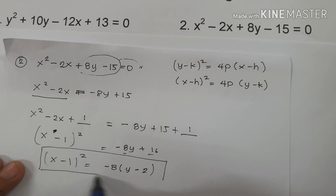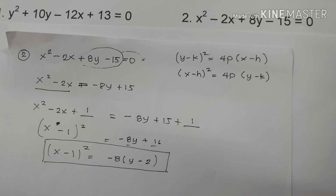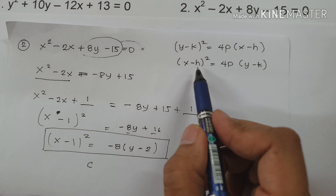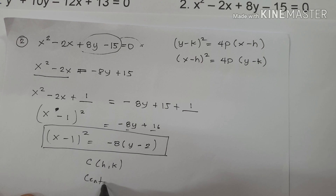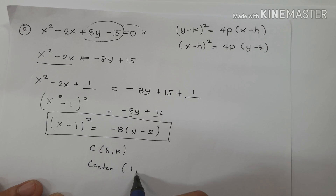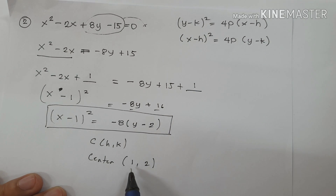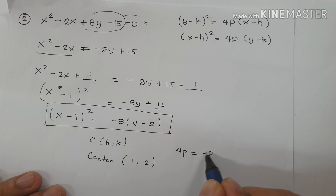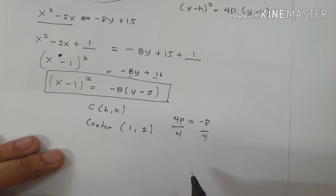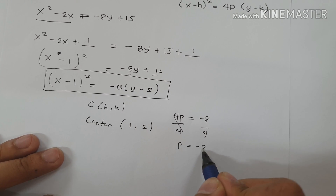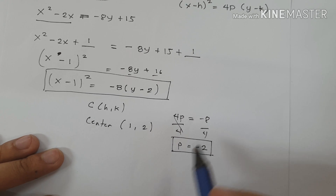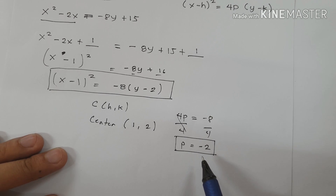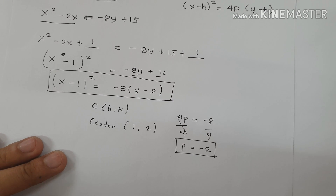So x minus 1 squared equals negative 8 times y minus 2 is the standard form of the equation of this parabola. From this equation, our vertex is h equals 1 and k equals 2, giving us positive 1 and positive 2. For the value of p: 4p equals negative 8, so dividing both sides by 4 gives p equals negative 2. Since p is negative, our parabola opens downward, meaning the vertex is the maximum point.